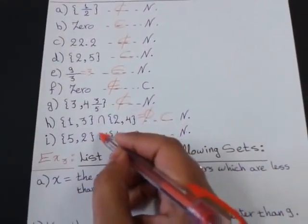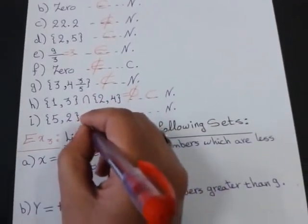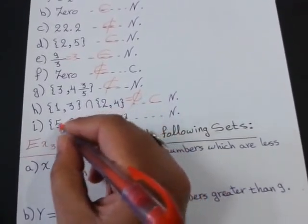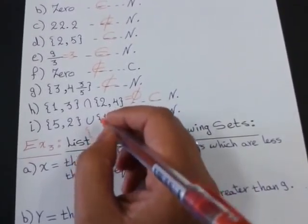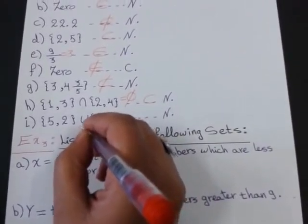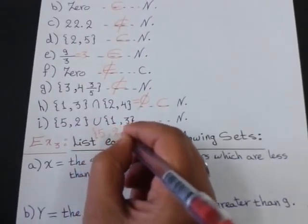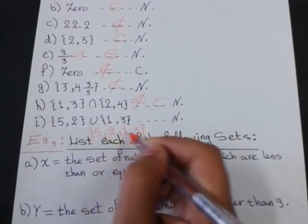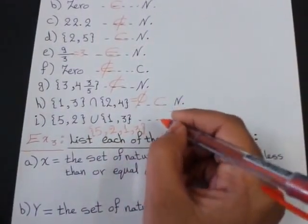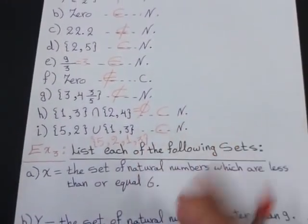5 and 2 union. Union means I will put all the elements inside one set without repetition. So, the new set 5, 2, 1 and 3. All of these are natural numbers. So, this is subset of N.